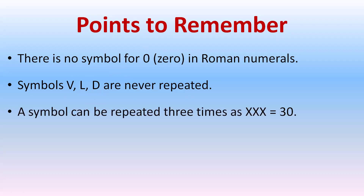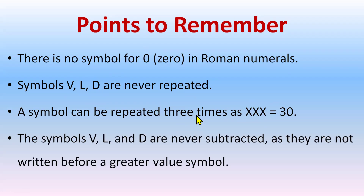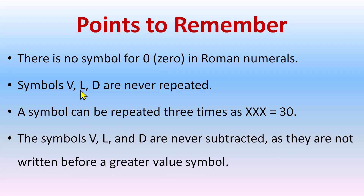A symbol can be repeated 3 times only. It doesn't mean if you write X four times it equals 40 — no, that would be wrong. You cannot repeat more than 3 times. Also, the symbols V, L, and D are never subtracted — they are not written on the left side before a greater value symbol.